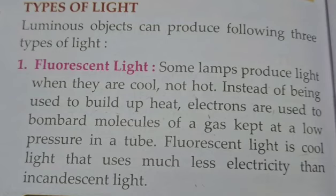Kya hota hai? Jo hamaray paas fluorescent light tube hote hain, uske andar argon gas fill ki jati hai. Aur argon gas ke molecules ko low pressure pe rakha jata hai with the help of electrons.